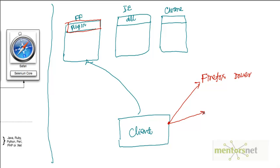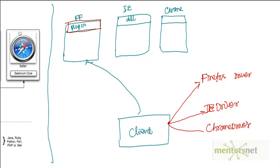Similarly, if you want to write a client using the IE driver — which is the Internet Explorer driver — it will launch Internet Explorer and control the automation using the DLL. Similarly, if you write a client using the Chrome driver, it will drive a Chrome browser using the ChromeDriver. There is also one more driver called the HTML Unit driver.